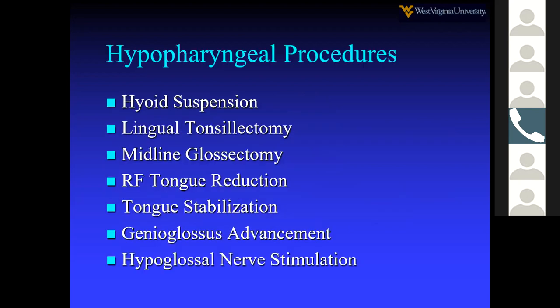The main surgical procedures in the hypopharynx include hyoid suspension, lingual tonsillectomy (more common in kids), midline glossectomy, radiofrequency tongue reduction, and tongue stabilization. Genioglossus advancement and hypoglossal nerve stimulation will be covered in a separate lecture.